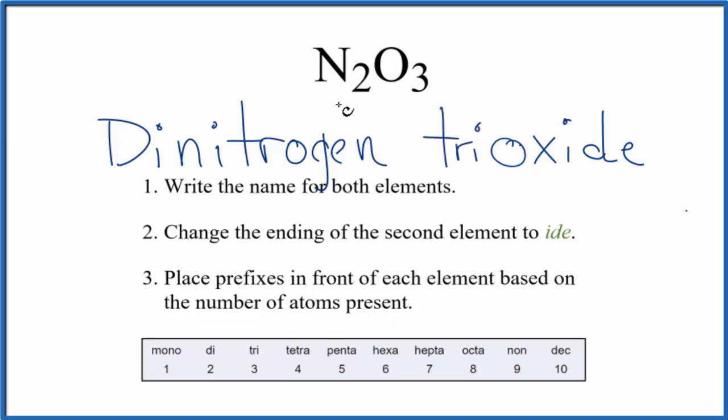And that makes the name for N2O3, dinitrogen trioxide. If you were given the name and asked to write the formula, you'd know there are two nitrogen atoms and three oxygen atoms. N2O3.